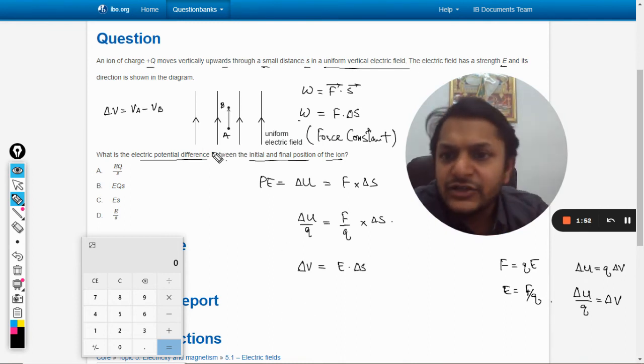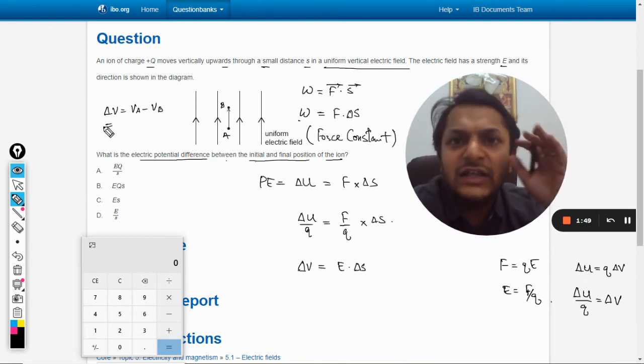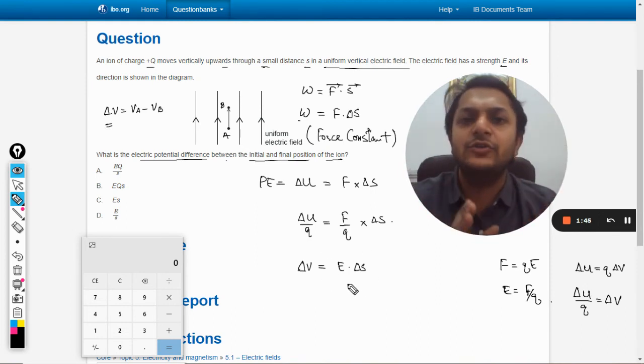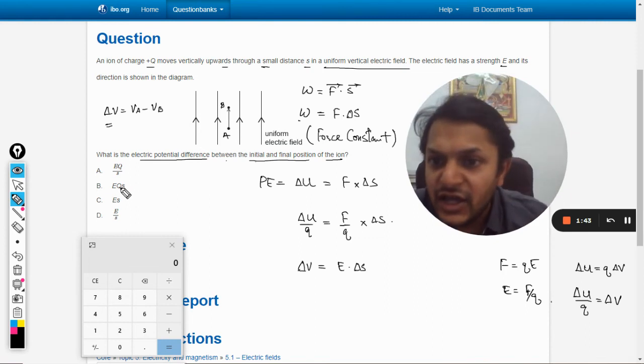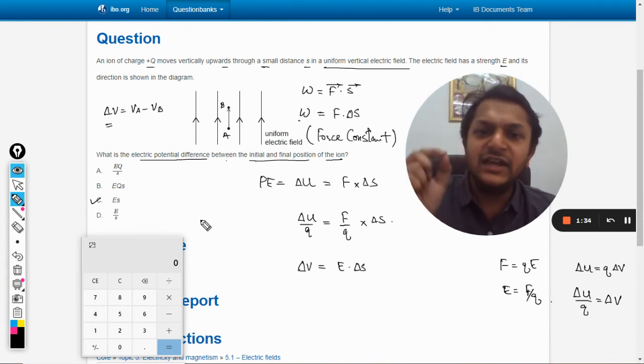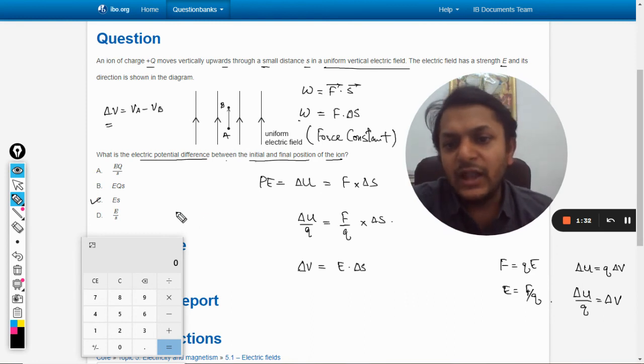So now they are saying in the question that we need to find the potential difference. So potential difference is given by E into the displacement, that is delta s. So accordingly in these equations, in these options, we have C as our answer. All other answers will be wrong, so it is E into s.